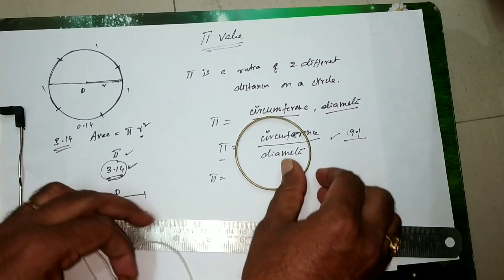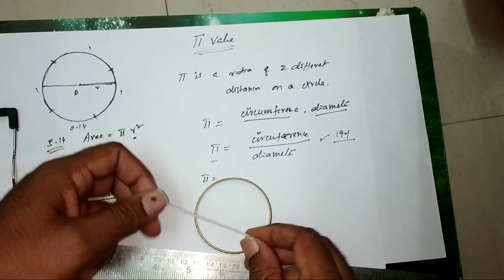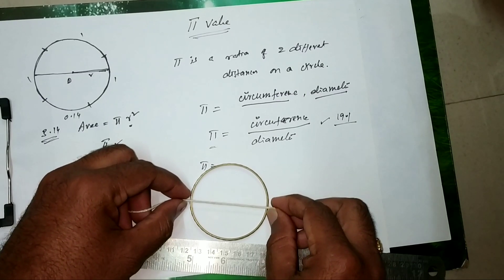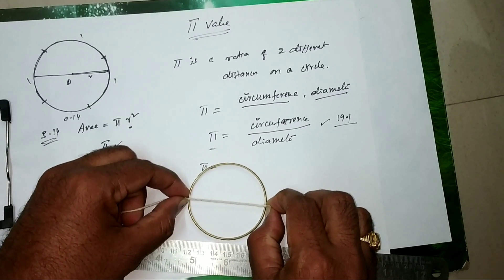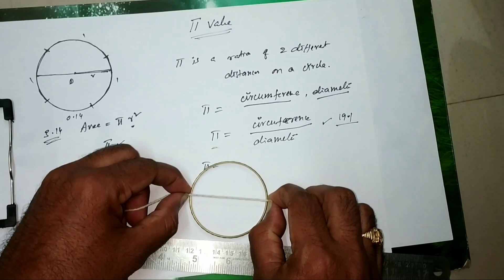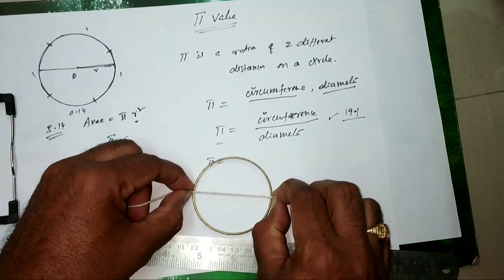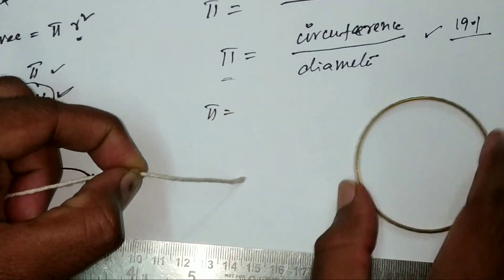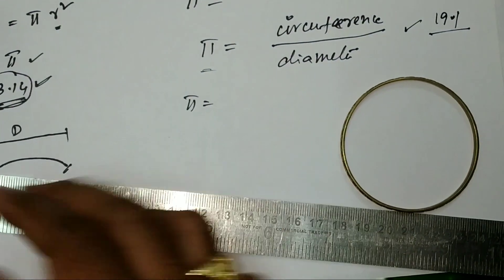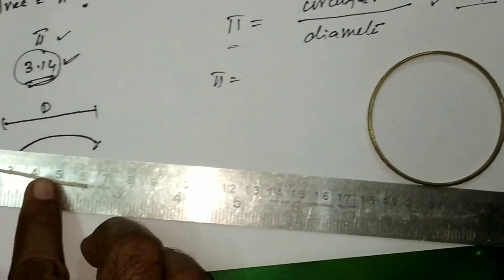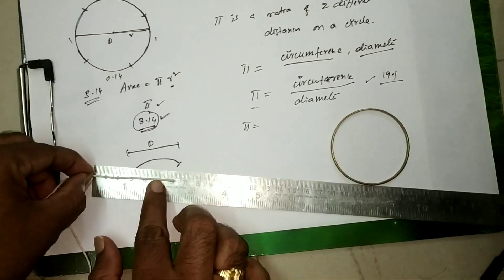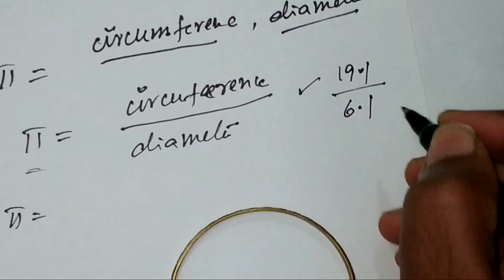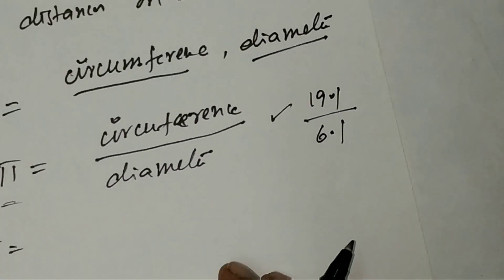Now I need to calculate the diameter. For a better measurement I measure from the 0-degree angle to the 180-degree angle straight across. Measuring with the scale, the diameter is approximately 6.1 cm.